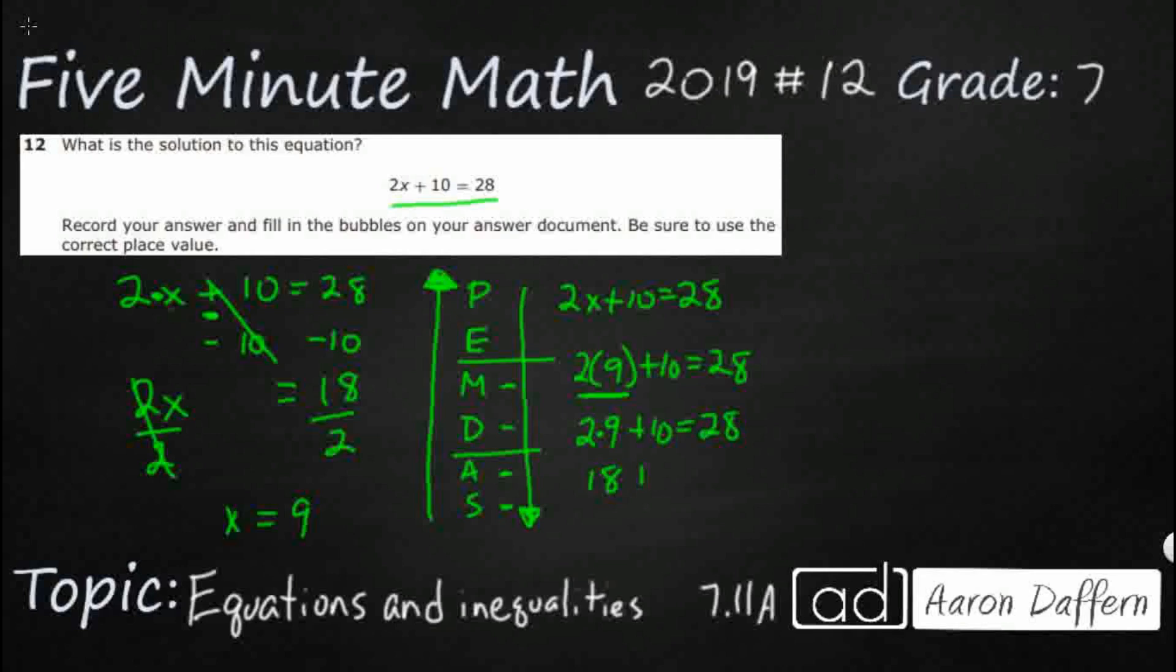That's 18. We're going to deal with that first. There's no division, but we do need to worry about addition next. 18 plus 10 is 28. And there we go. 28 equals 28. 9 is good.